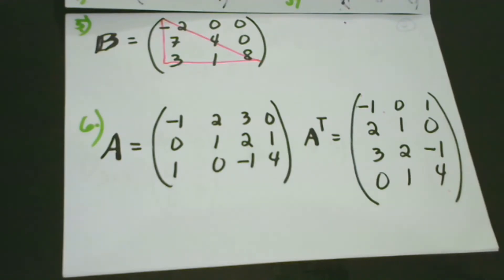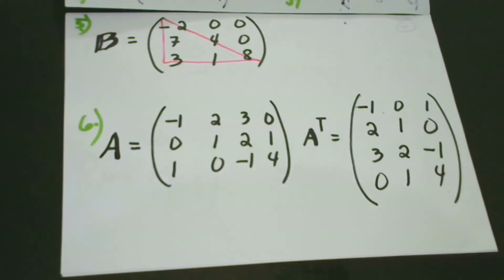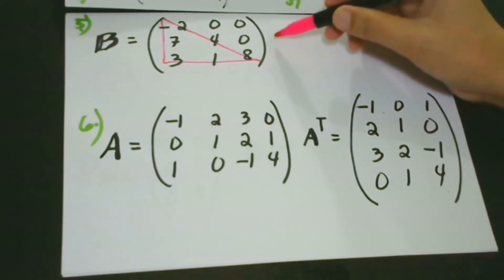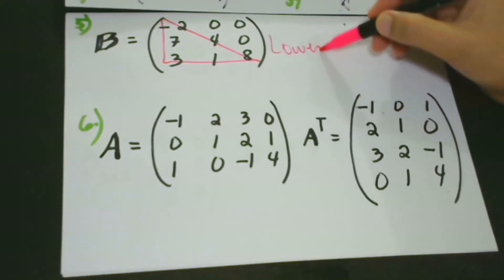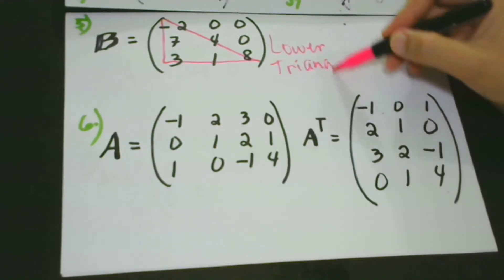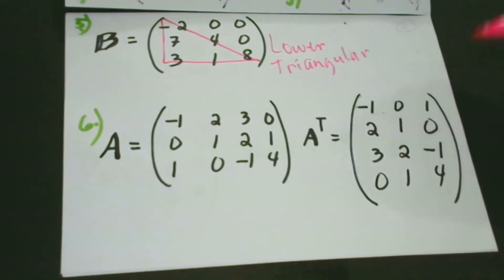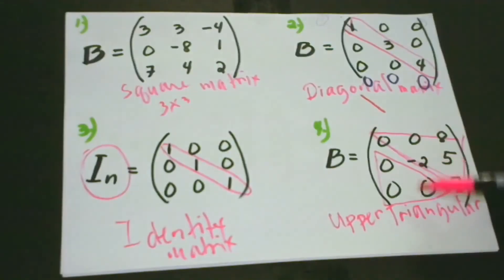And the lower values have non-zeros. That's it. This is the lower triangular matrix. Upper zeros, lower are zeros for the upper. Lower triangular matrix.